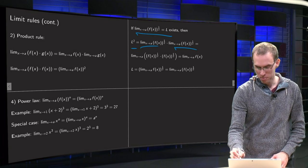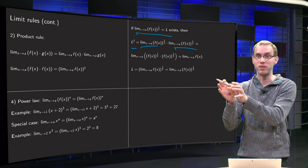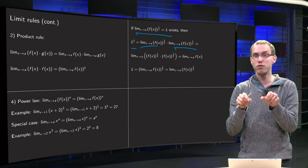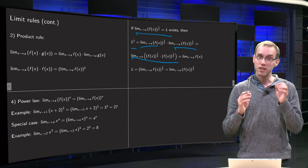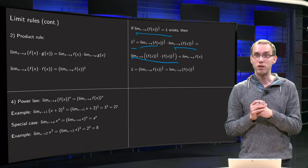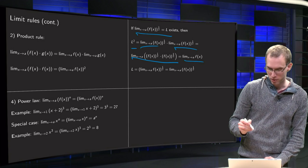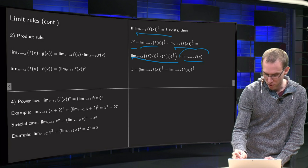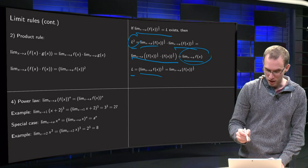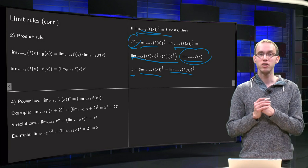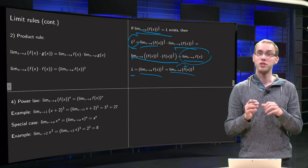Then L times L equals L squared, and L times L equals the limit times the same limit. Since both limits exist, we can use the product rule in reverse — take the limit of the product instead. The product of √f times √f is just f, so we get the limit as x→a of f. Taking square roots of both sides gives √(limit as x→a of f) = L, and since L is also the limit of √f, we see that we can take the square root inside the limit. That's the root law, similar to the power law.